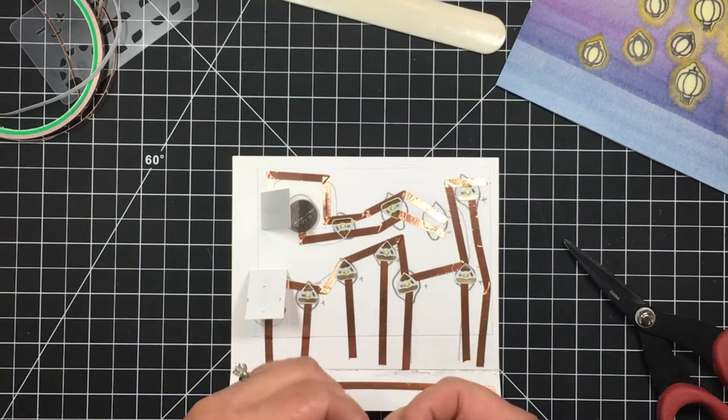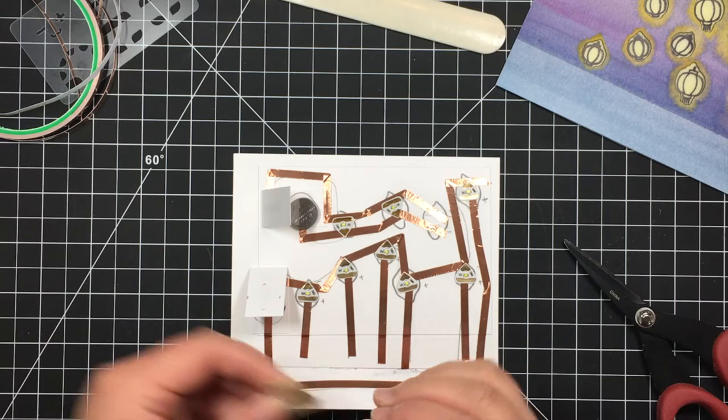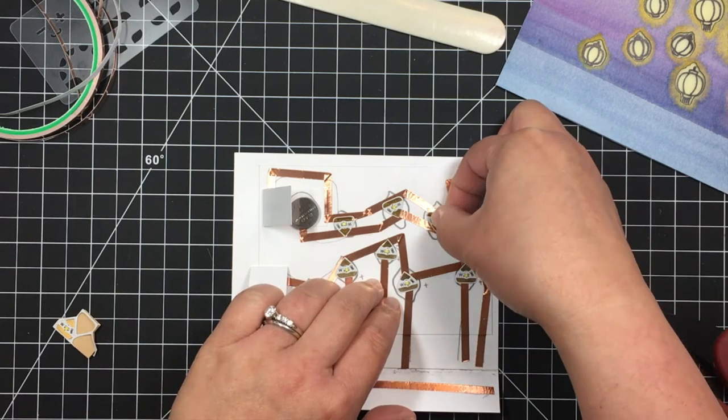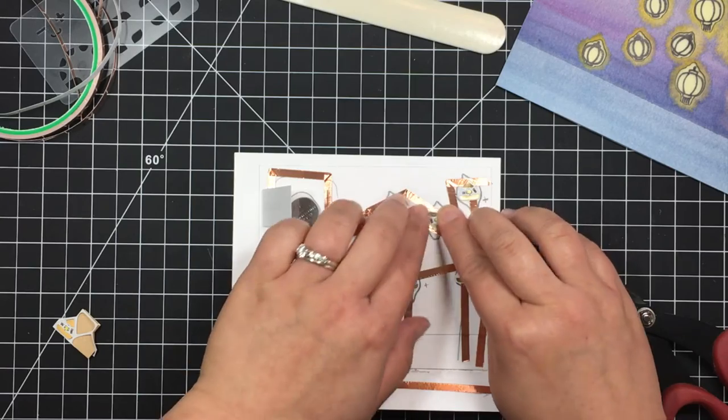Once all the copper tape is down I adhere my LED stickers making sure to line up the positive and negative sides of the stickers with the correct positive and negative sides of the battery.